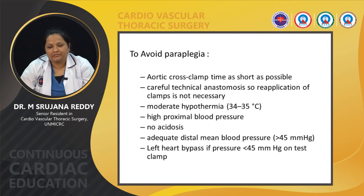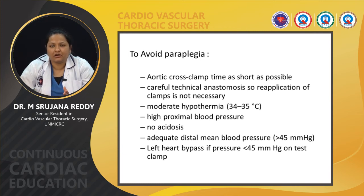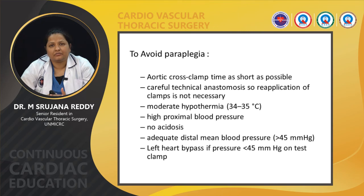To avoid paraplegia, it is proposed to keep the aortic cross-clamp time as short as possible, maintain moderate hypothermia around 34 to 35 degrees Celsius, maintain good proximal pressure, ensure distal mean pressures are around 45 mmHg, and ensure there is no acidosis. If on test clamping the pressure drops below 45 mmHg, it is better to proceed with left heart bypass.